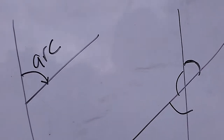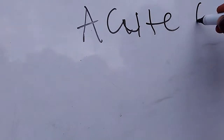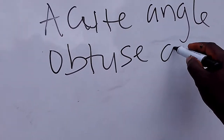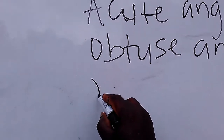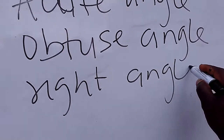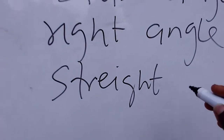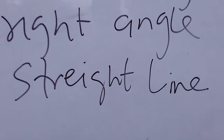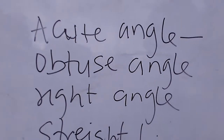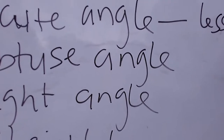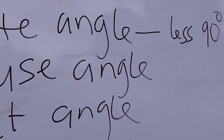I went further to explain the types of angles we have, which are Acute angles, Obtuse angles, Right angles, and Straight Line angles. The acute angles are angles that are less than 90 degrees.